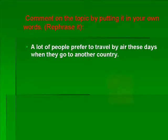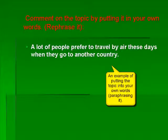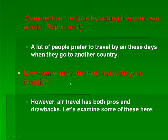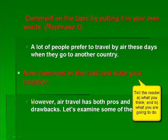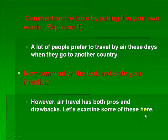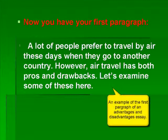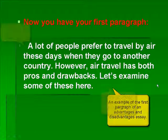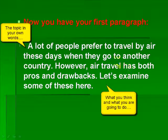Next you want to comment on the topic by putting it into your own words. Look at the title and rephrase it — don't just repeat it word for word, because again you'll lose marks. Then comment on the task and state your intention, saying what you're going to do. In this essay you're going to look at both the pros and the cons and examine examples of each. So now you have your first paragraph: a rephrased title and a statement of what you're going to do in the essay.